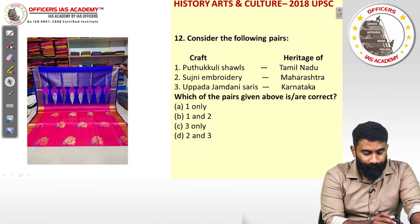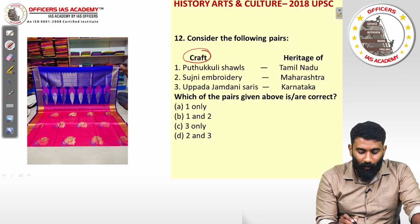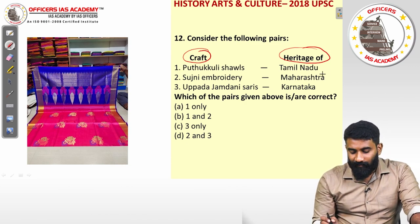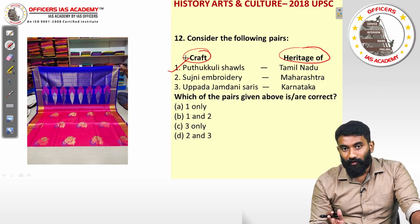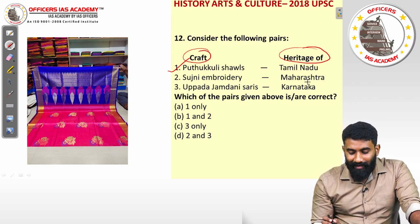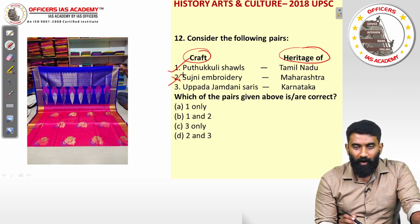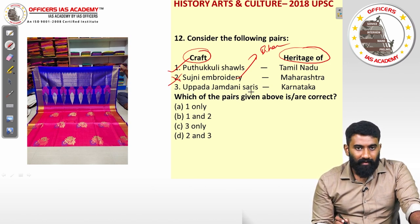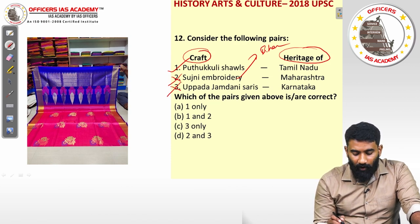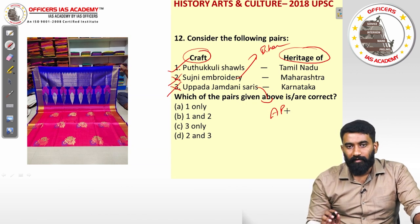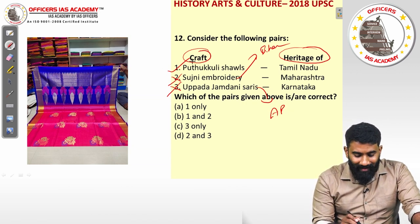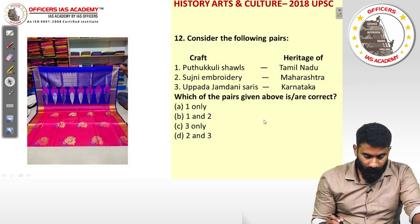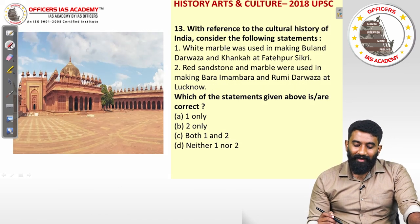Question twelve pairs craft items with states. First: Puttukuli shawl and Tamil Nadu — correct. Second: Sujini embroidery and Maharashtra — wrong, it belongs to Bihar. Third: Uppada jamdani sarees and Karnataka — wrong, it belongs to Andhra Pradesh. So only statement one is correct — the answer is option A.